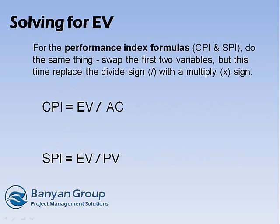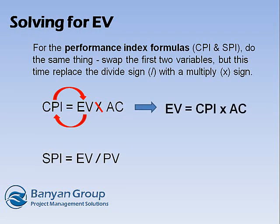For the performance index formulas, CPI and SPI, do the same thing: swap the first two variables, but this time replace the divide sign with a multiply sign to get the result.